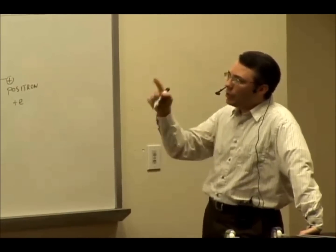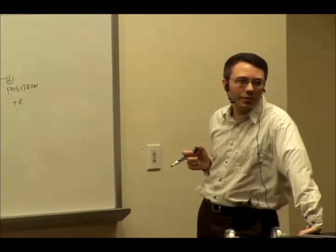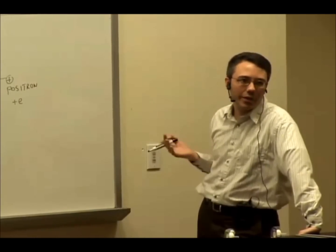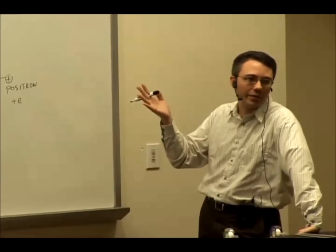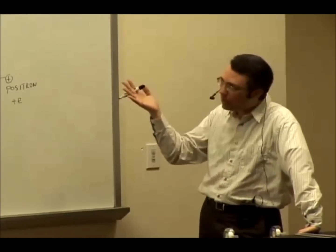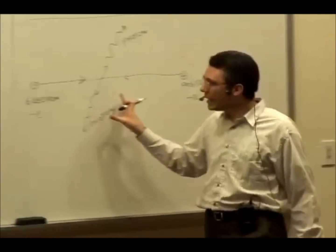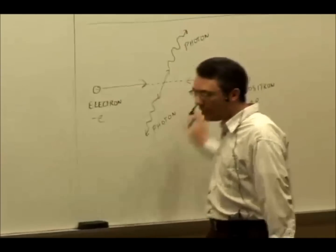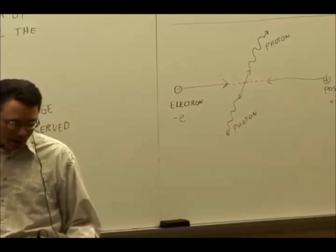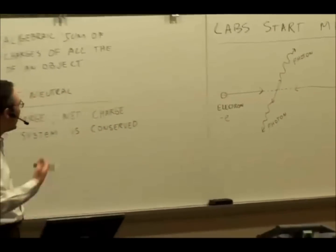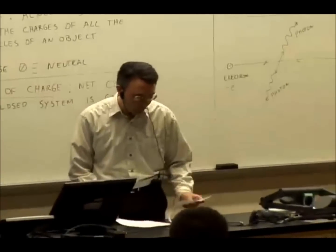What was the total charge of the two-particle system before the collision? Zero. What was the total charge of the system after the collision? Zero. Even though the individual electron and positron may be gone, we had a net charge of zero before and a net charge of zero after, so conservation of charge holds.